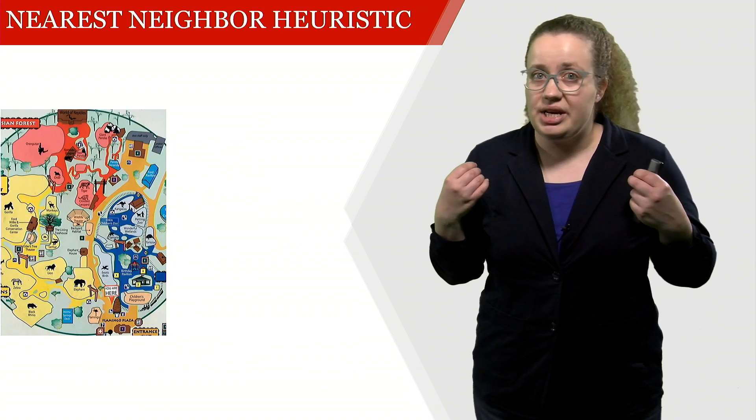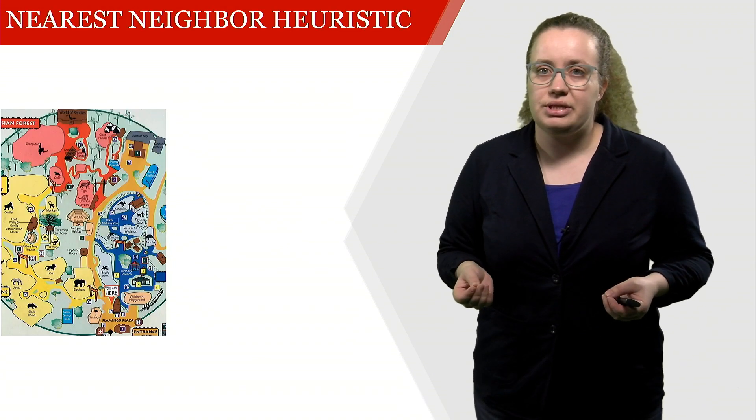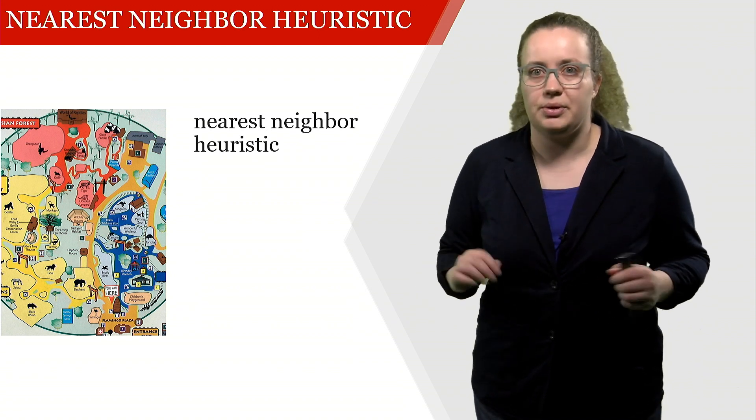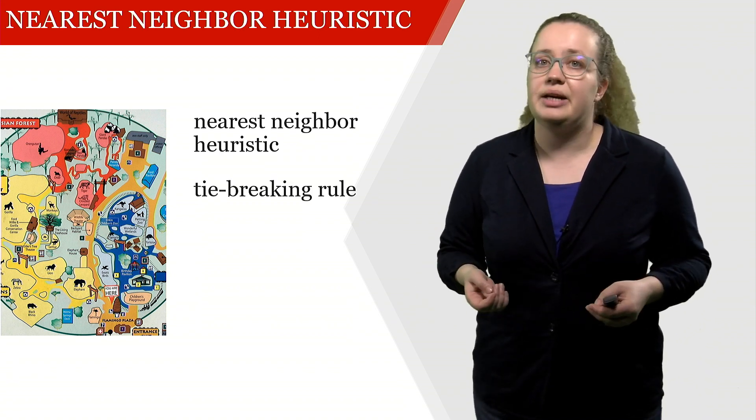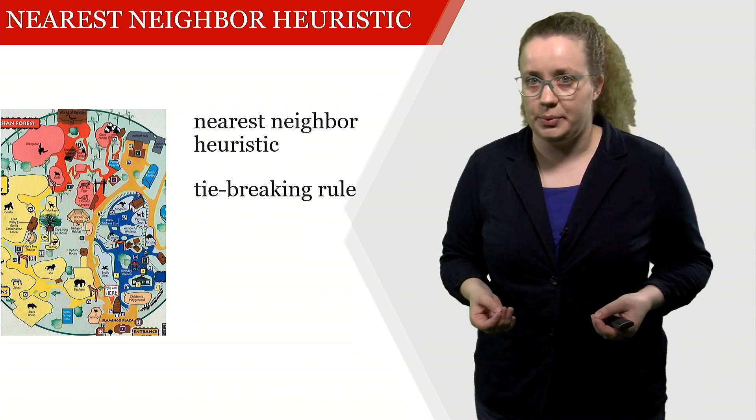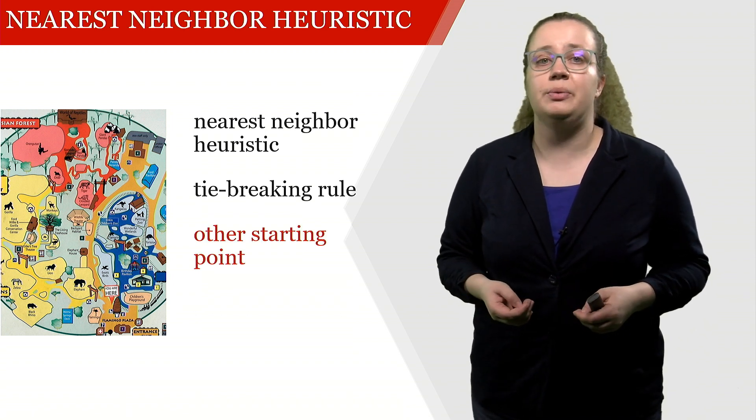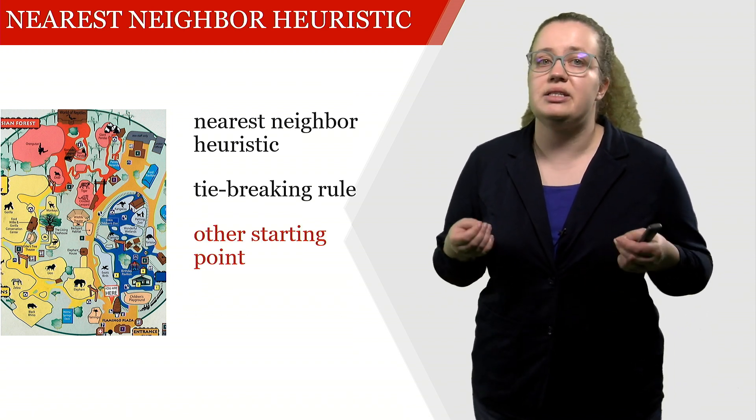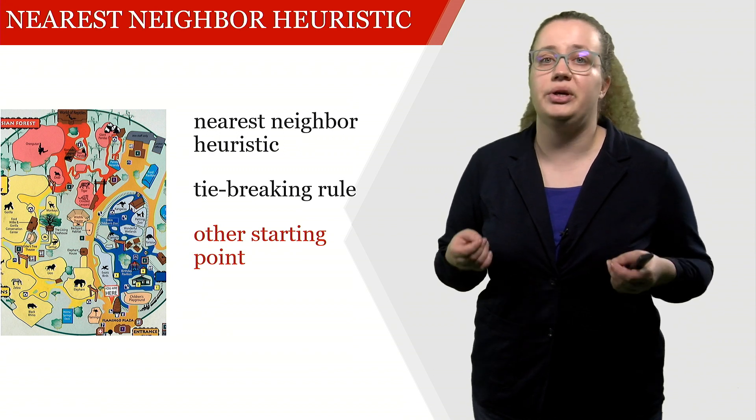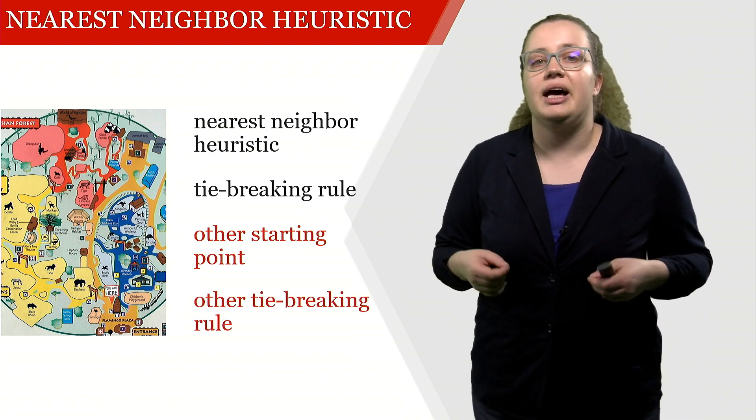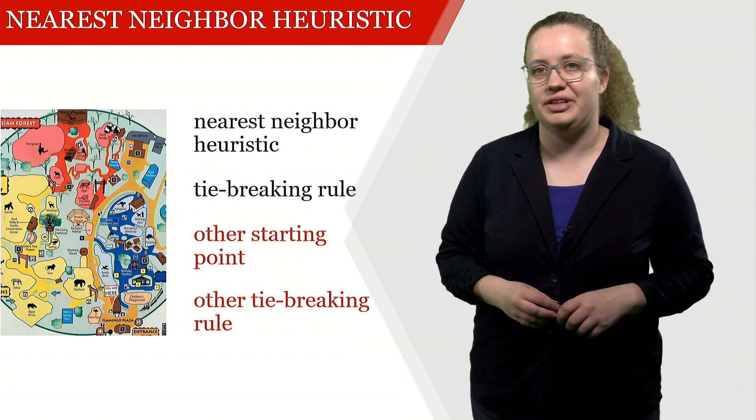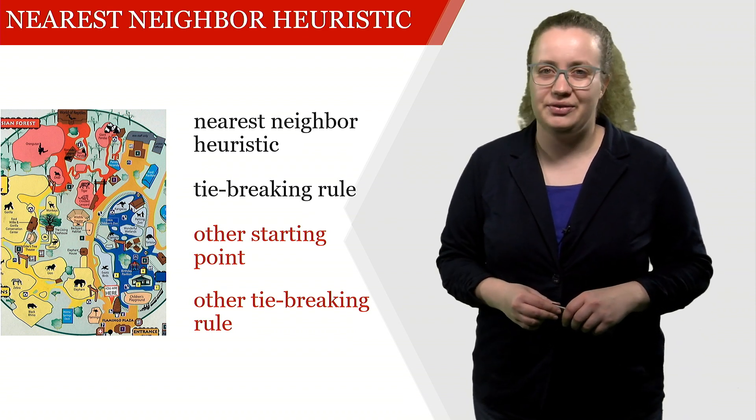What I would like you to take away from this web lecture on the nearest neighbor heuristic is, first of all, what the nearest neighbor heuristic is. Secondly, I would like you to take away what a tie-breaking rule is. What I would like you to look into is what happens if you use another starting point in this very simple example, and also what happens if we have another tie-breaking rule. Thank you very much.